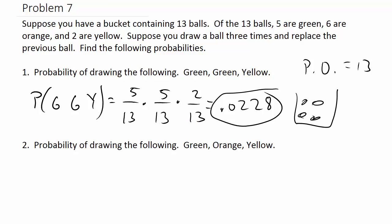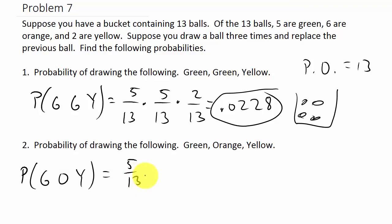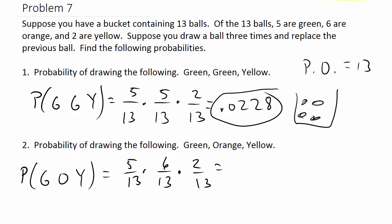You can see this probability differs from the previous without-replacement problem. Now, the probability of drawing green, then orange, then yellow with replacement: green is 5/13, orange is 6/13 (the green was replaced so there are still 13 balls), and yellow is 2/13. That gives approximately 0.0273 rounded to four decimal places.